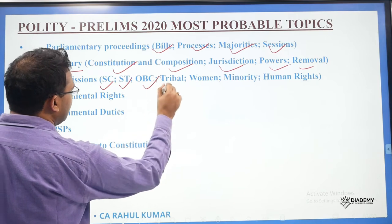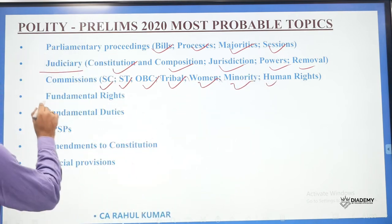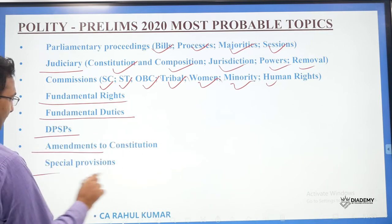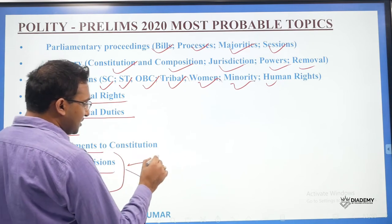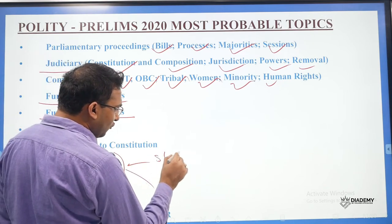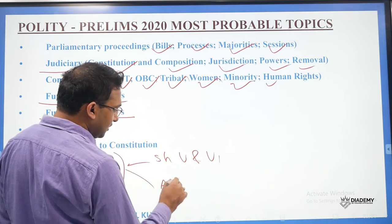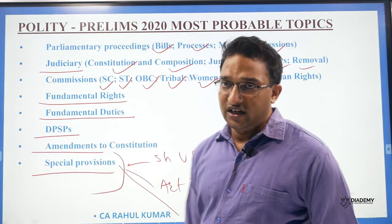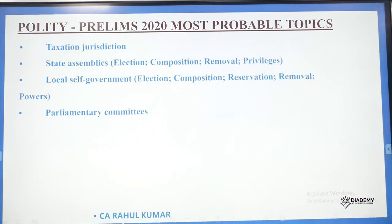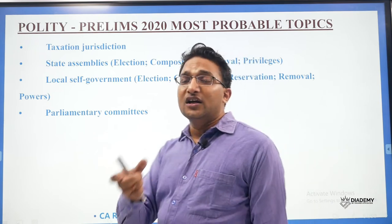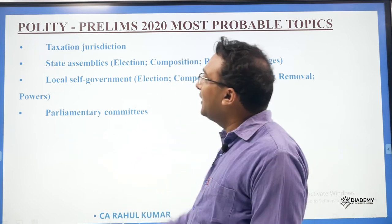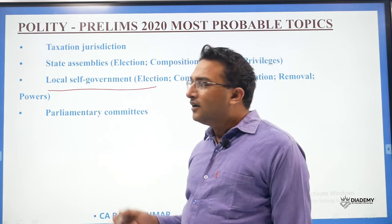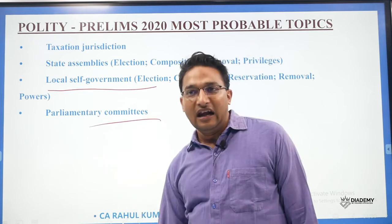Commissions — various commissions, especially the SC Commission, ST Commission, and also tribal, women, minority, and human rights. Fundamental Rights, Fundamental Duties, DPSP, various amendments to the Constitution, and special provisions — for example, under Schedule 5 and 6, Article 370, and various other special statuses given to various states. Taxation jurisdiction — what is the jurisdiction of the state government and what is the jurisdiction of the central government — state assemblies, local self-government, 73rd and 74th Constitutional amendments, and various parliamentary committees and their roles.